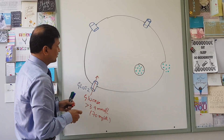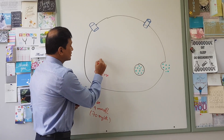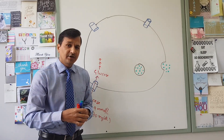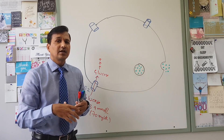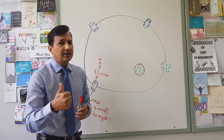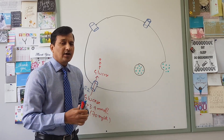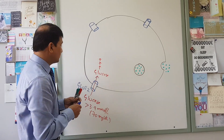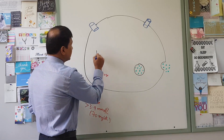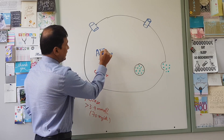When blood glucose is more than 70 mg/dL or 3.9 mmol/L, glucose gets into the beta cells and undergoes glycolysis, making pyruvate. Pyruvate is converted into acetyl-CoA, which enters the TCA cycle and is completely oxidized into carbon dioxide. During this process, NADH, FADH2, and GTP are produced. NADH and FADH2 enter the electron transport chain and generate ATPs, causing a rise in the ATP to ADP ratio.